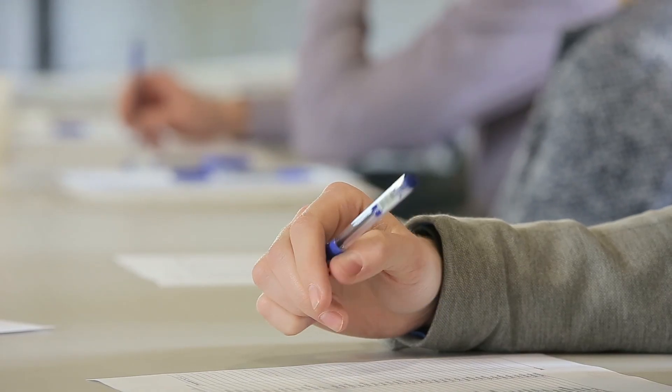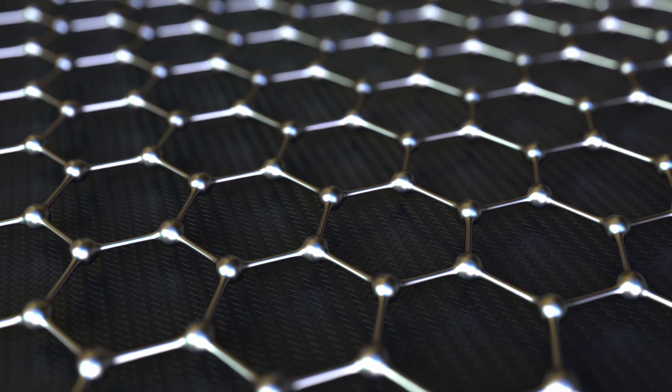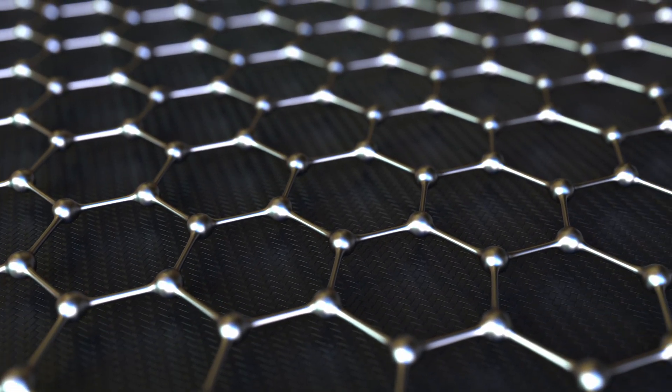For people who never took chemistry in high school or after 10th grade, this may all seem like nonsense. What is a bond angle even? Let us start from the beginning and revisit bonds. There is nothing that atoms love more than stability, and there are many ways to attain this — the main way is to form bonds with other atoms by losing or sharing electrons.